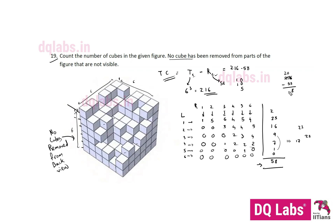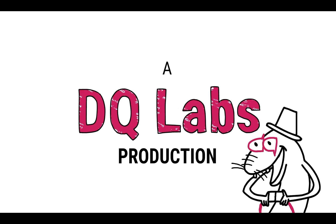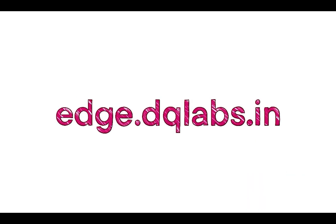So 216 minus 58 is the total number of cubes. 216 minus 58 equals 158. The total number of cubes is 158.